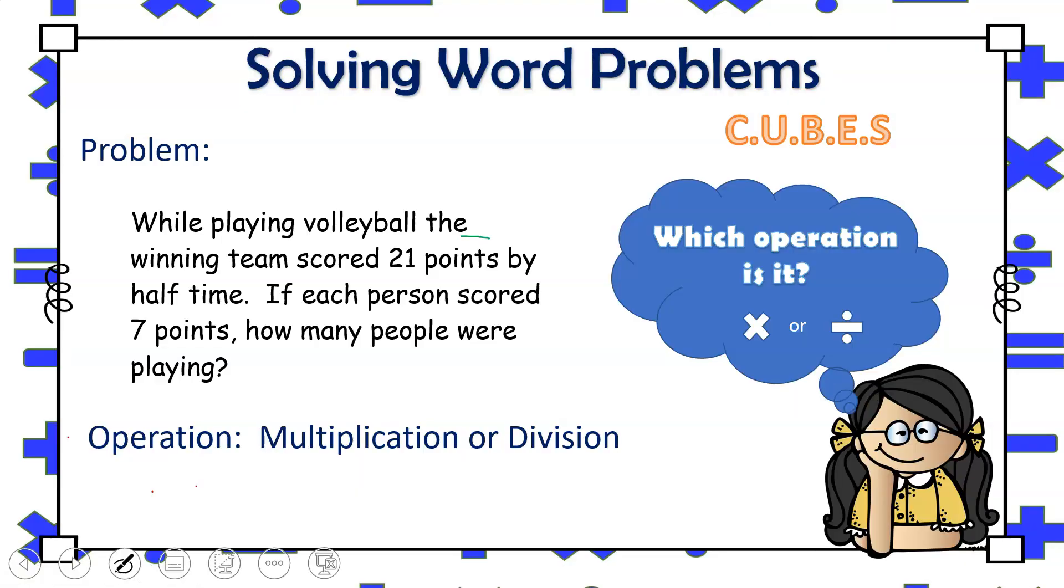The C in the CUBES strategy reminds us to circle the important numbers that we will need in order to solve this problem. Now, identifying the question: how many people were playing?